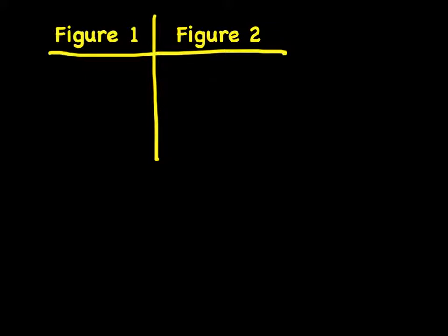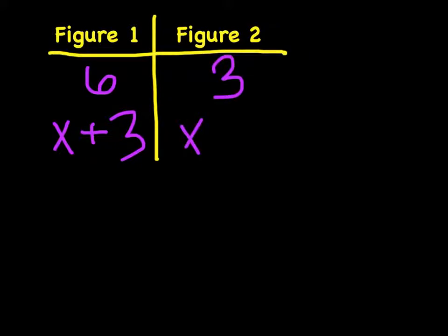In figure 1, the two sides given are 6 and x plus 3. For figure 2, it's 3 and x minus 2.